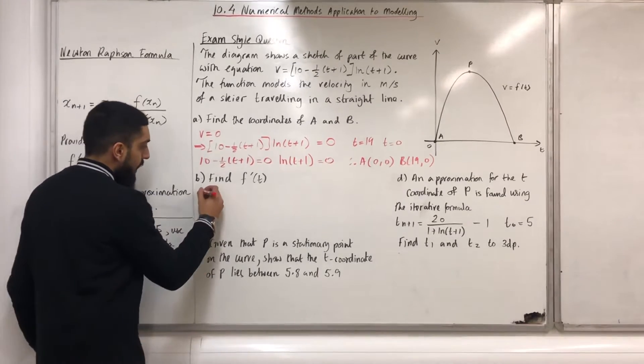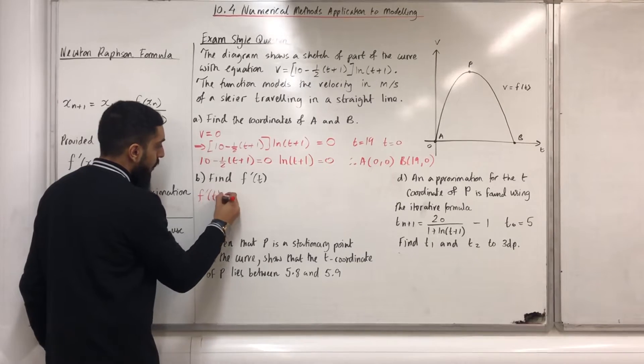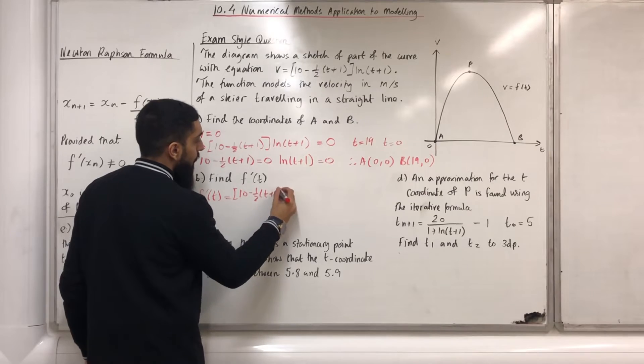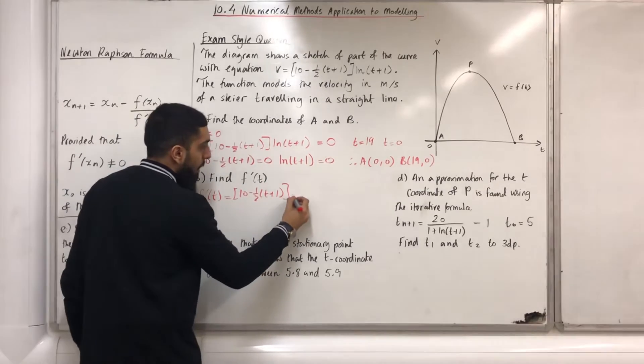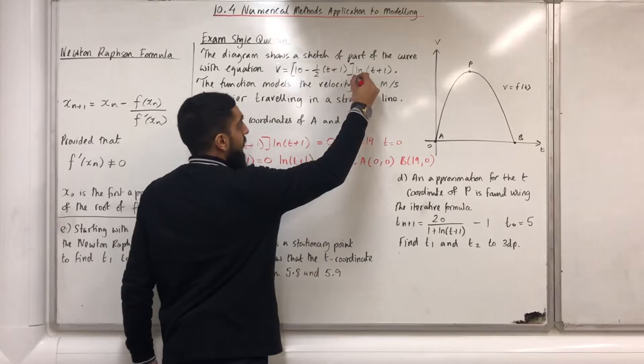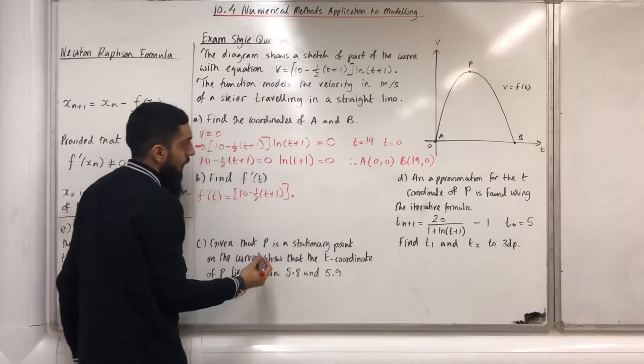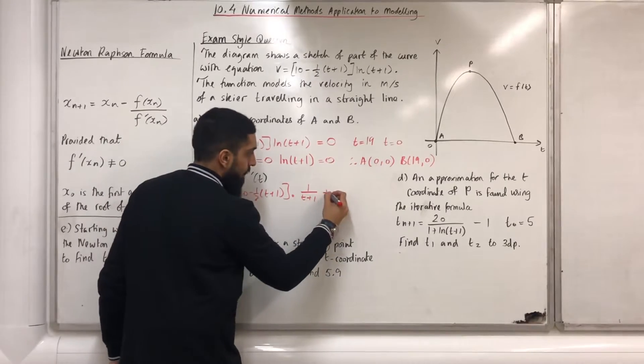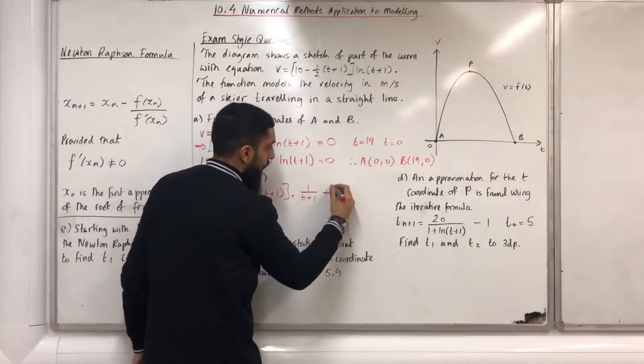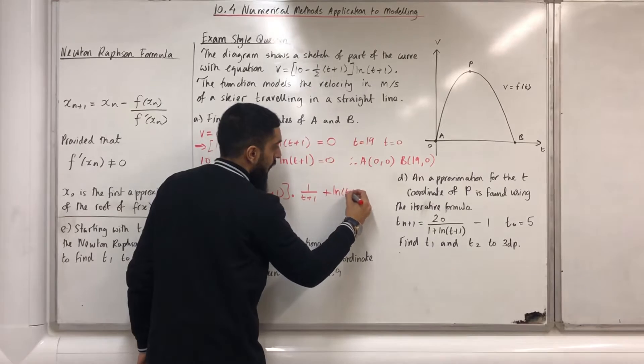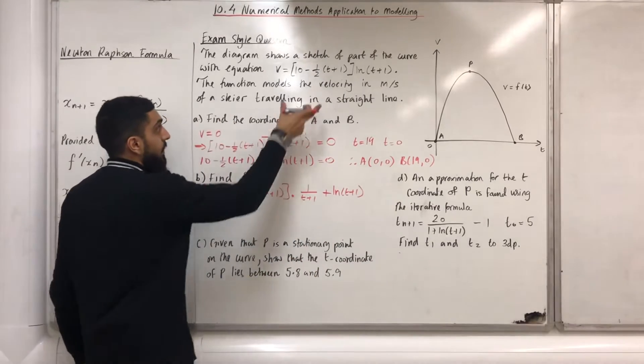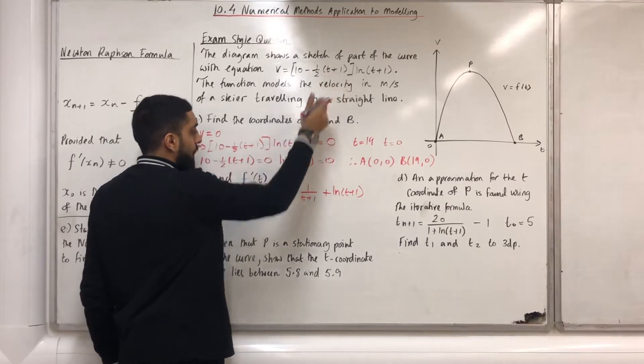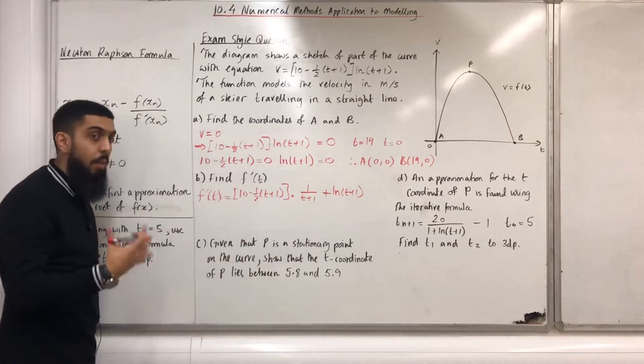f'(t) = [10 - 0.5(t+1)] × 1/(t+1) + ln(t+1) × the derivative of [10 - 0.5(t+1)]. Well, the derivative of that will be -0.5.